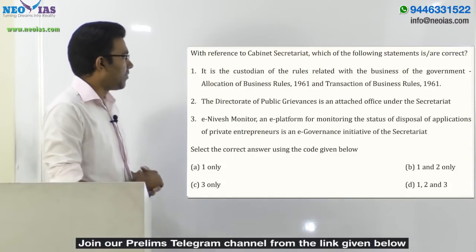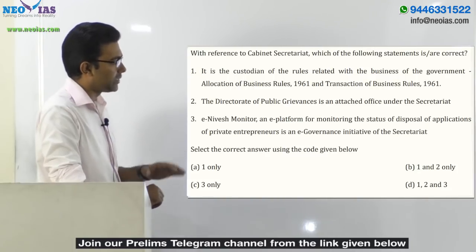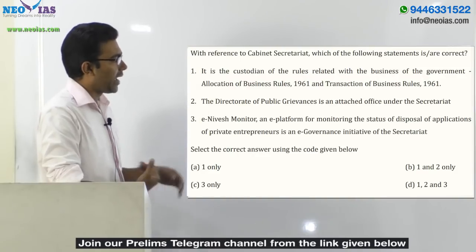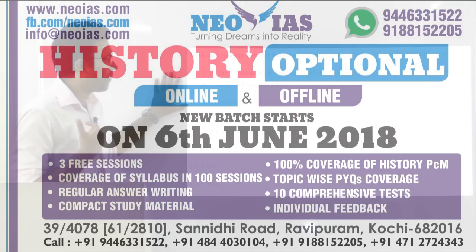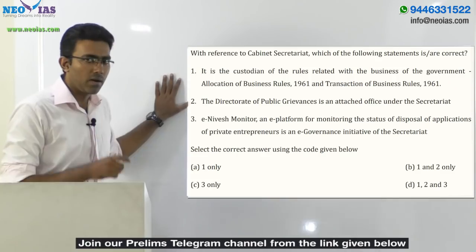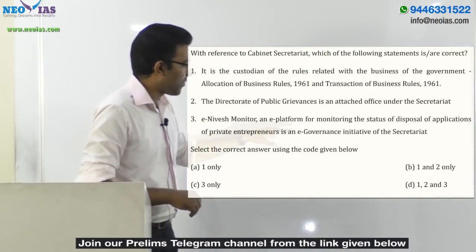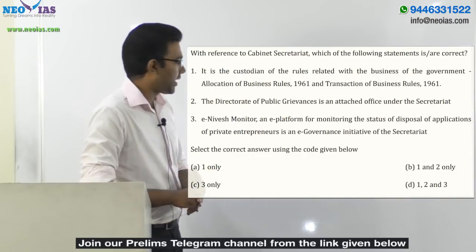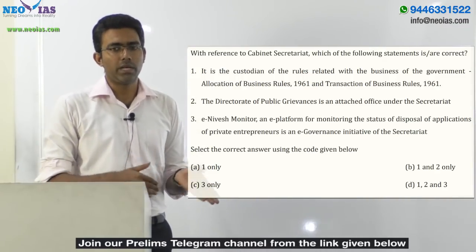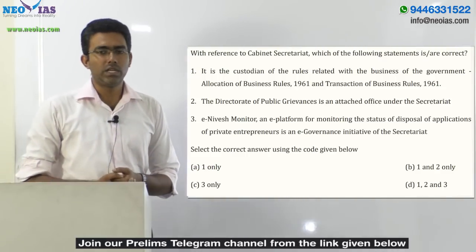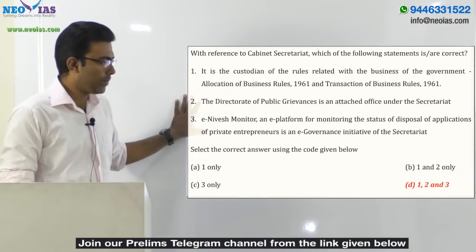Coming back to the question: with reference to cabinet secretariat, which of the following statements are correct? First statement — it is the custodian of Allocation of Business Rules 1961 and Transaction of Business Rules 1961 — is correct. Second statement — the Directorate of Public Grievances is an attached office under the secretariat — is also correct. Third statement — e-Nivesh Monitor as an e-governance initiative of the secretariat — is also correct. Since all three are correct, the answer is D, that is 1, 2, and 3.